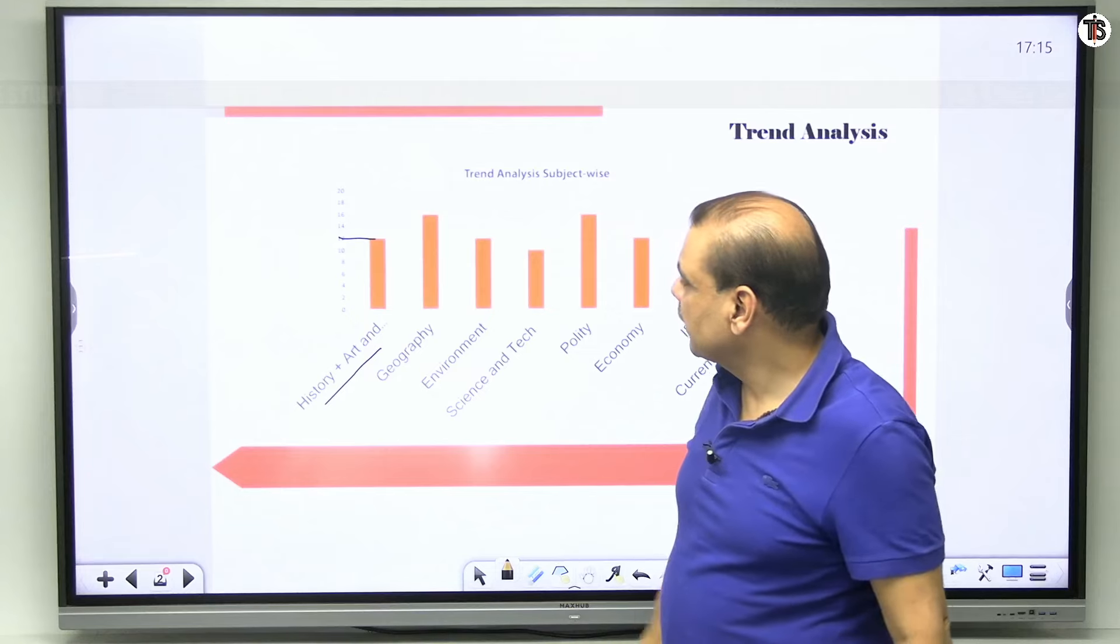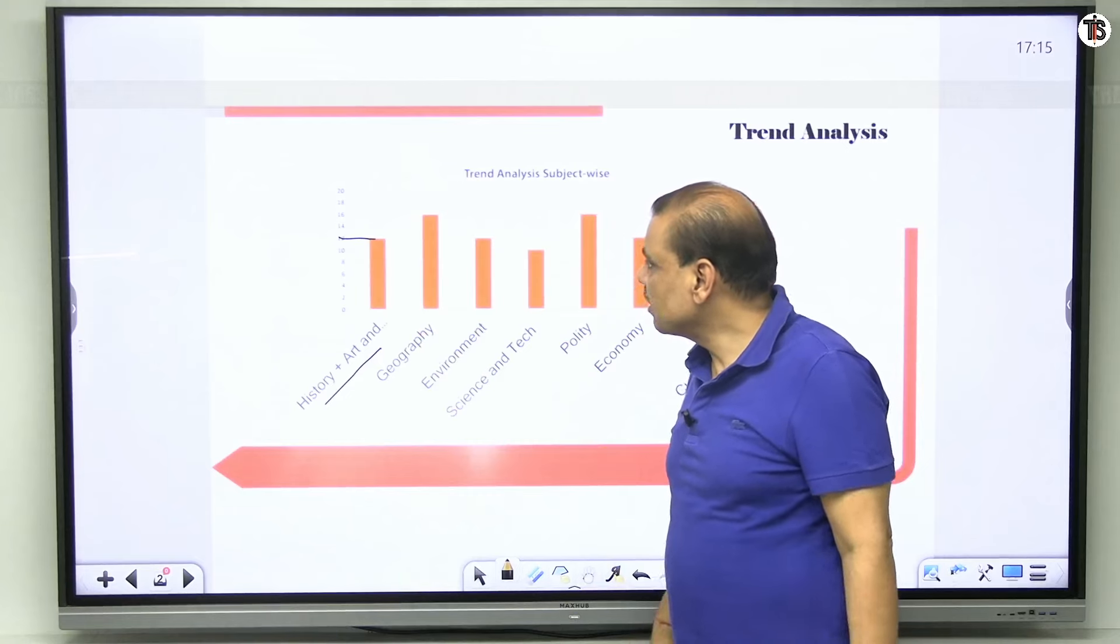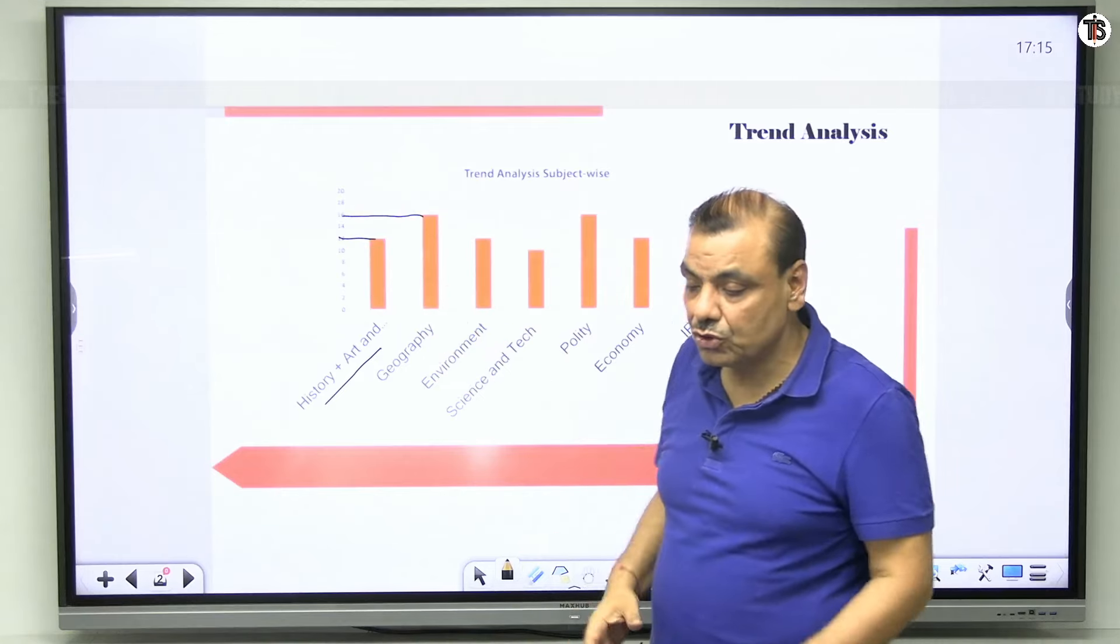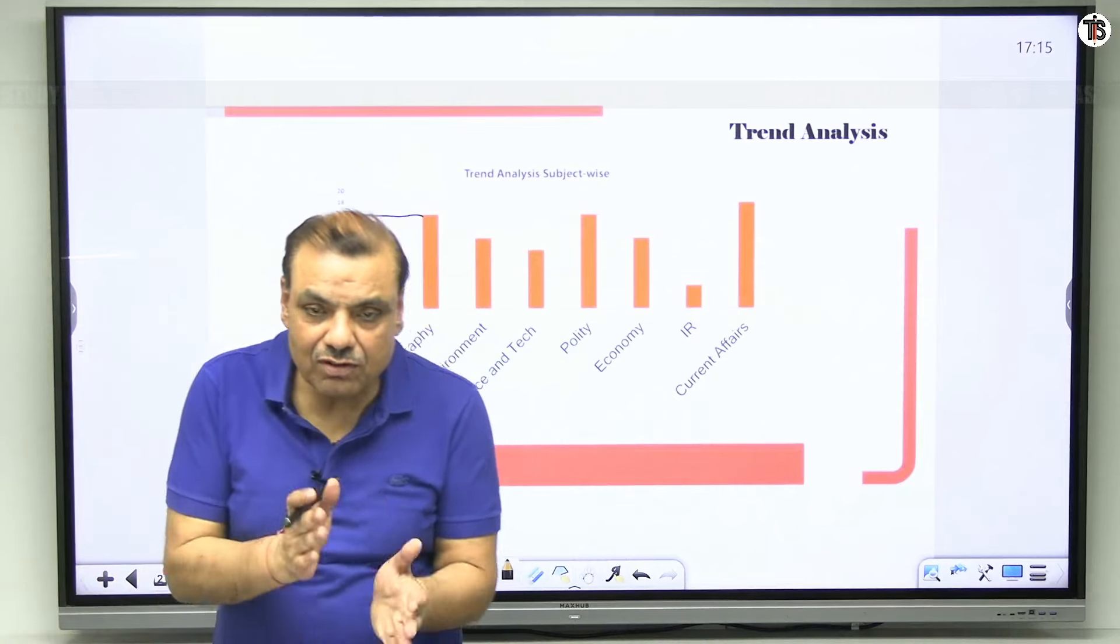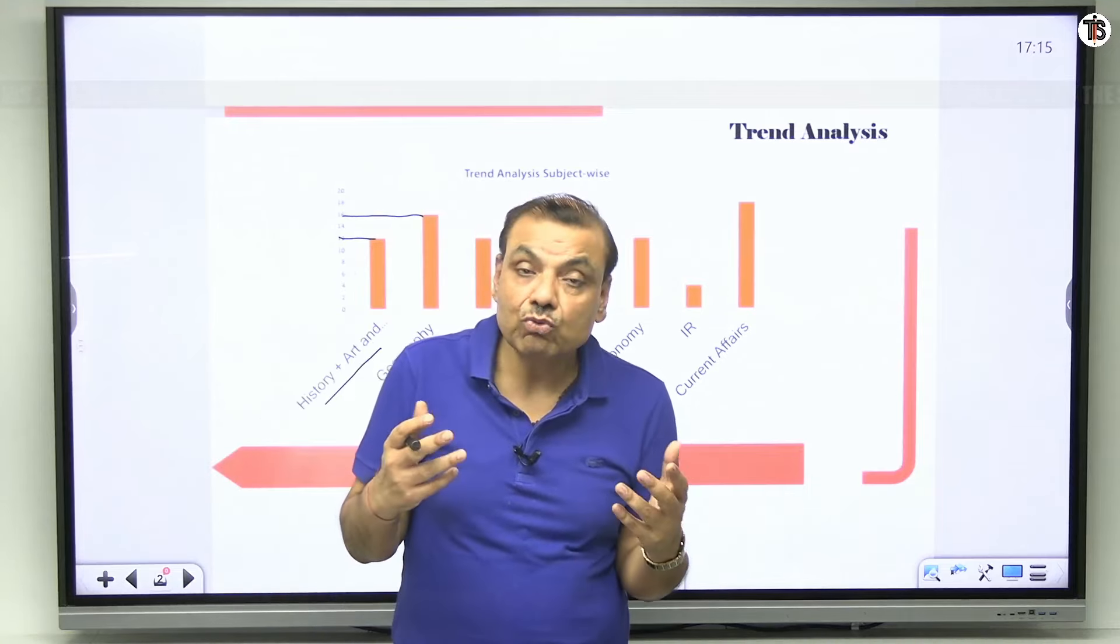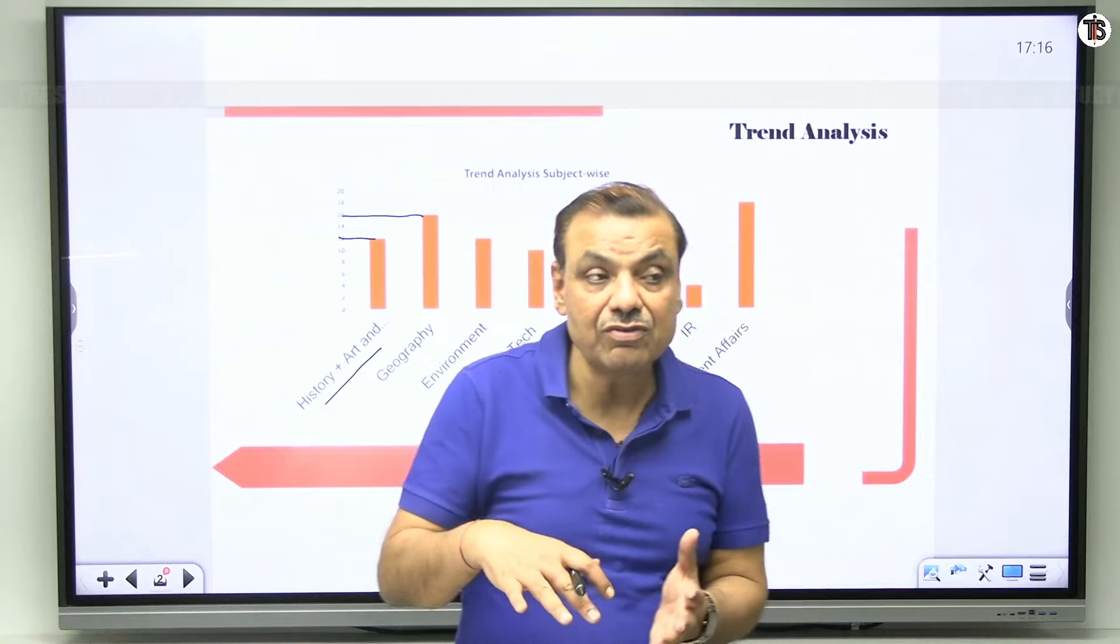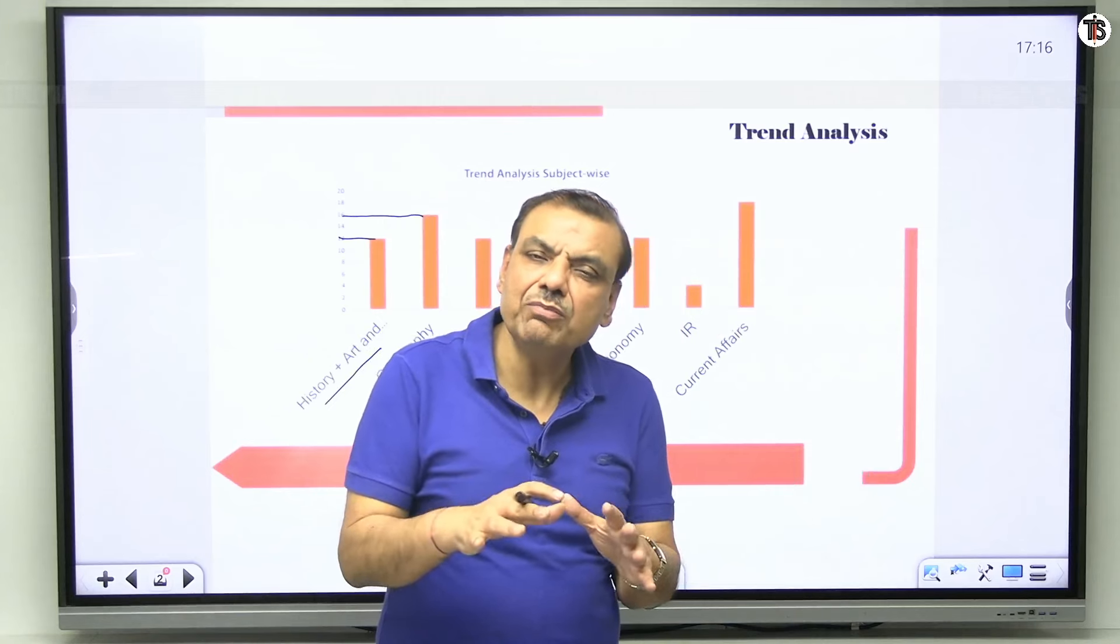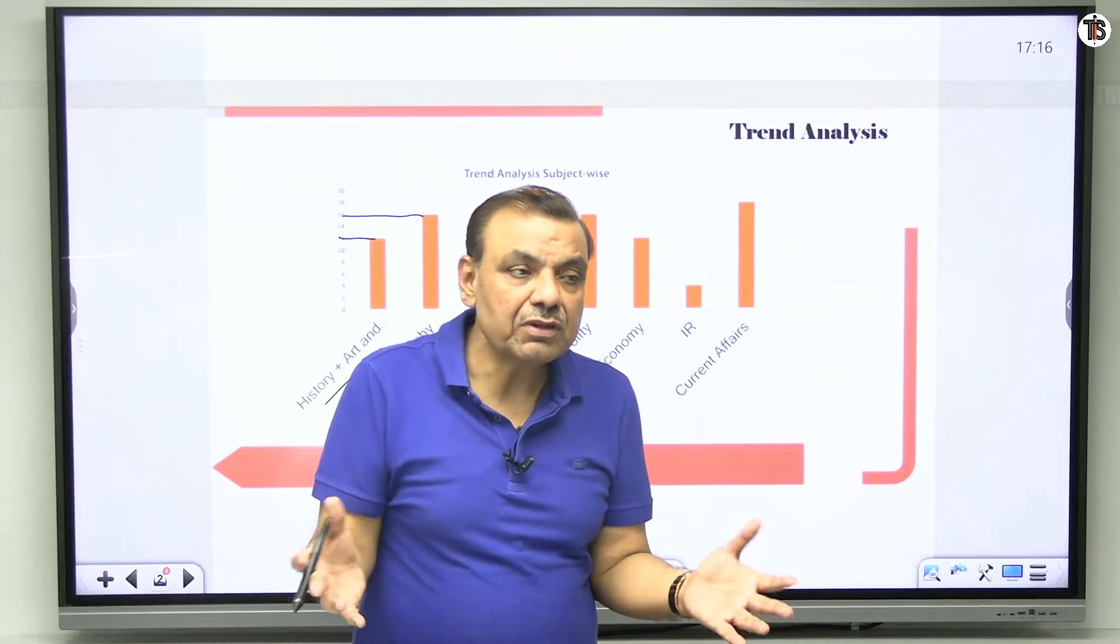So that is in history and culture. Then come to geography. In geography side you will find 16 questions. You will find the slight difference between the two, because there was a trend from 2018 onwards, the number of questions in the side of history was possibly falling between something 22 and 20.